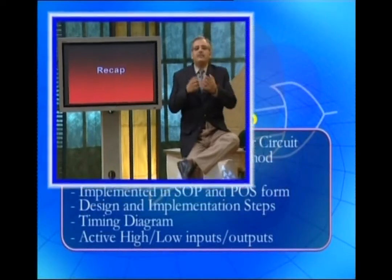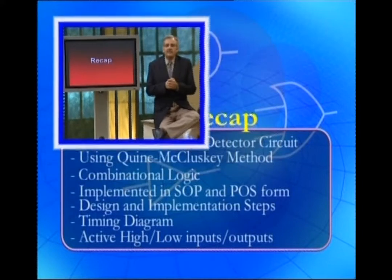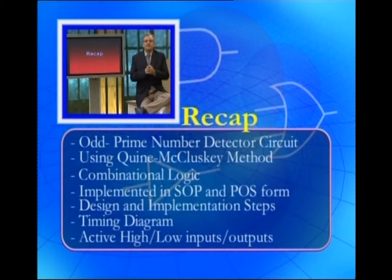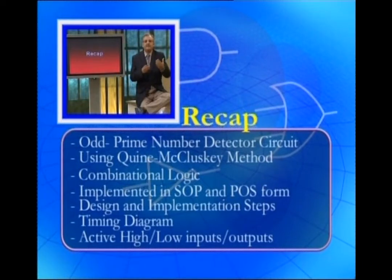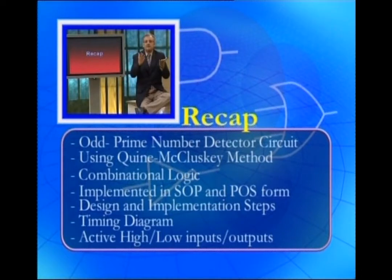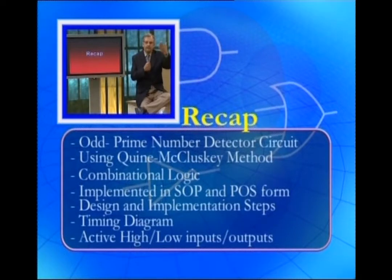In the last lecture, we started our discussion by looking at the Quine-McCluskey method. We used the method to simplify the expression representing the odd prime number generator circuit. The number of variables in that circuit were five, so we could not use the Karnaugh map; therefore the Quine-McCluskey method was used.